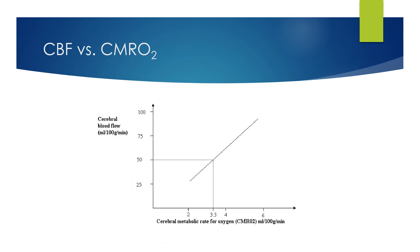Blood flow is very closely linked with the cerebral metabolic rate of oxygen consumption. Now in health, that's typically around 3.3 mils of oxygen for every 100 grams of brain tissue per minute. At that level of CMRO2, cerebral blood flow is approximately 50 mils per 100 grams of brain tissue per minute.